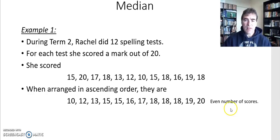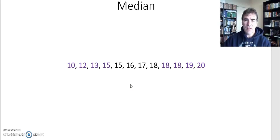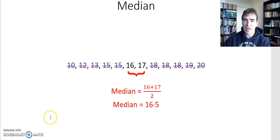There's an even number of scores, so we expect two middle scores. We cross off the smallest and largest, then repeat: next smallest and largest, then the next, then the next, until as expected there are two middle scores left. We add them together and divide by two using the fraction template on our calculator, and we find that our median is 16.5. So that's how we find the median for small data sets.